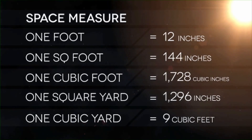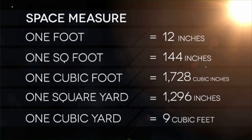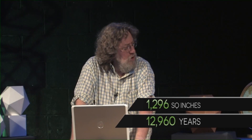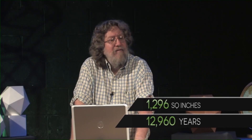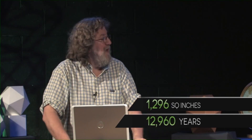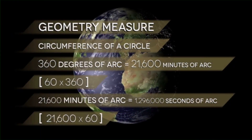A cubic foot equals 1,728. I want to call your attention to the one square yard, which is 1,296 square inches. We can stick a zero on the end of that and we have 12,960 years, which turns out to be an awesomely important span of time in terms of some of the great cycles that affect this planet — and that's what we're going to be getting to.